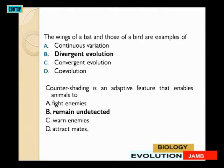The wings of the bat and those of the bird are examples of what? Options: divergent evolution, convergent evolution, co-evolution. The answer is divergent evolution.